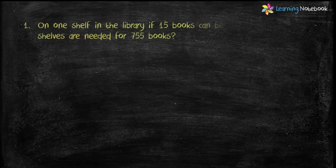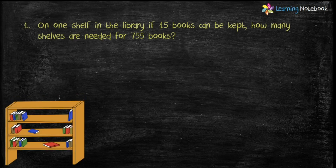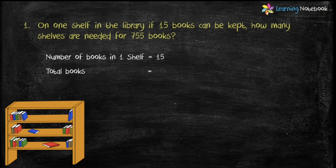Question 1 is: on one shelf in the library, if 15 books can be kept, how many shelves are needed for 755 books? Students, always solve word problems with the help of statements. Number of books in one shelf equals 15. Total books equals 755. Therefore, number of shelves needed equals 755 divided by 15.